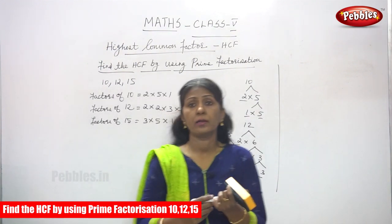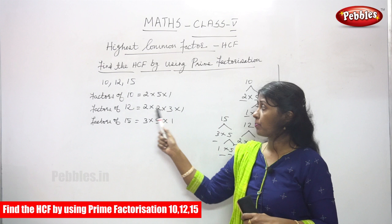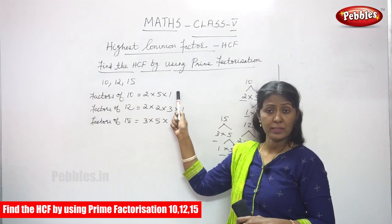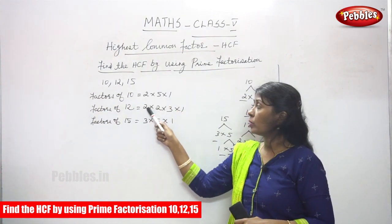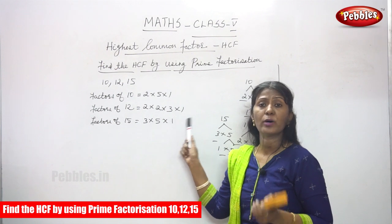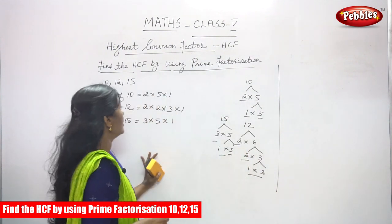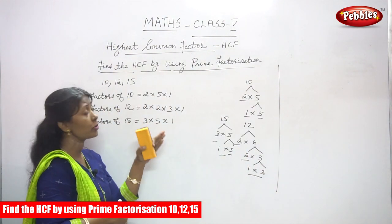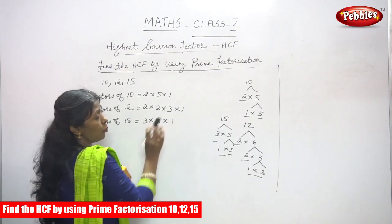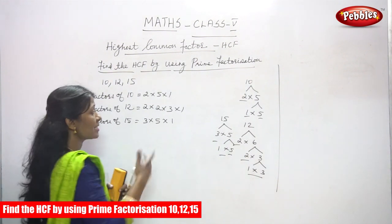Now we will look at the factors of 10, 12, and 15 together. Factor of 10 is 2 into 5 into 1. Factor of 12 is 2 into 2 into 3 into 1 — that gives 4 into 3 which is 12. Factors of 15 is 3 into 5 into 1, which gives 15. Do you notice any common factors for these numbers? No, you cannot find any common factor other than 1.